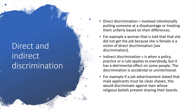Direct discrimination involves intentionally putting someone at a disadvantage or treating them unfairly, quite openly, based on their differences. For example, a woman is told that she did not get a job because she is female. This means she is a victim of direct discrimination, which would also be a form of sex discrimination.